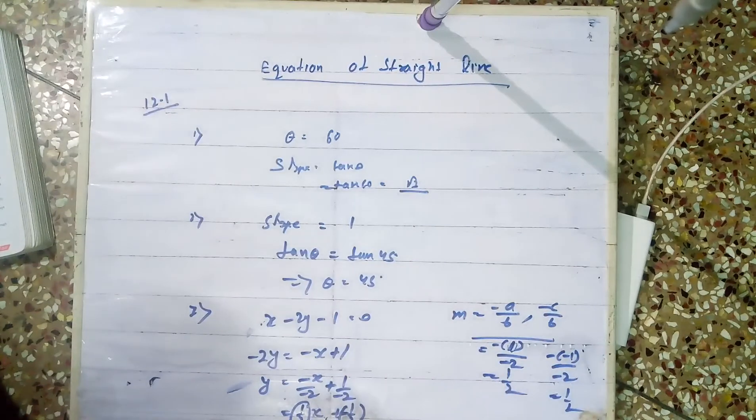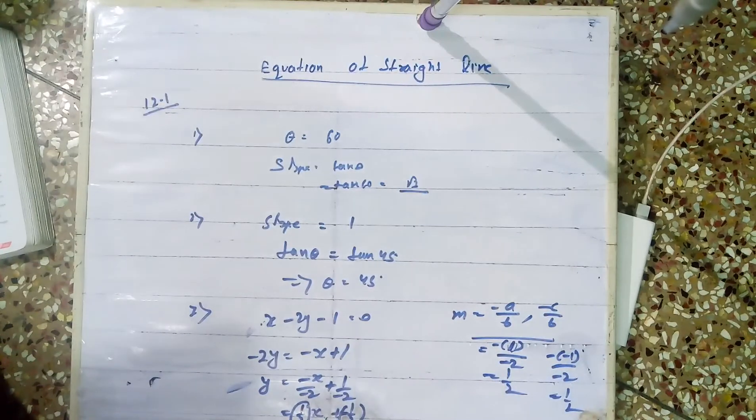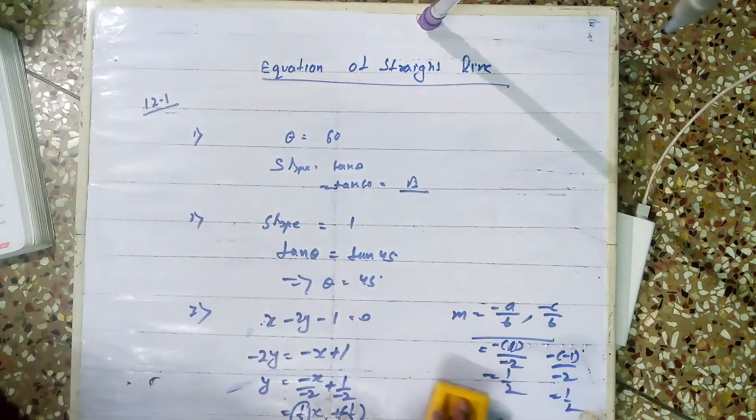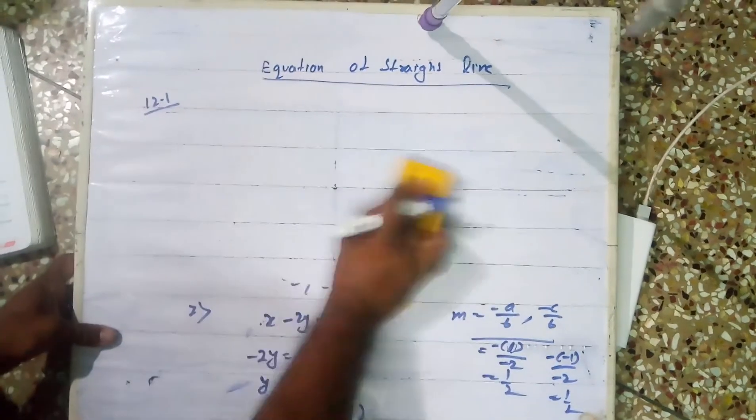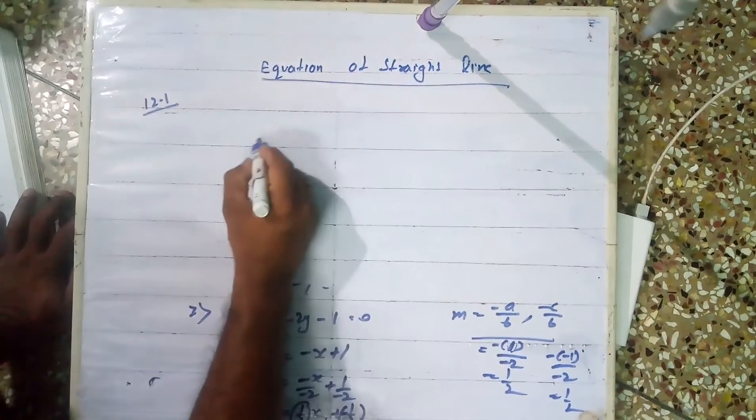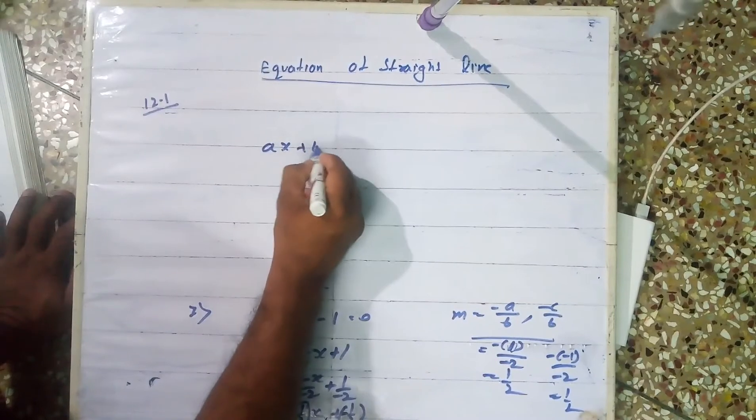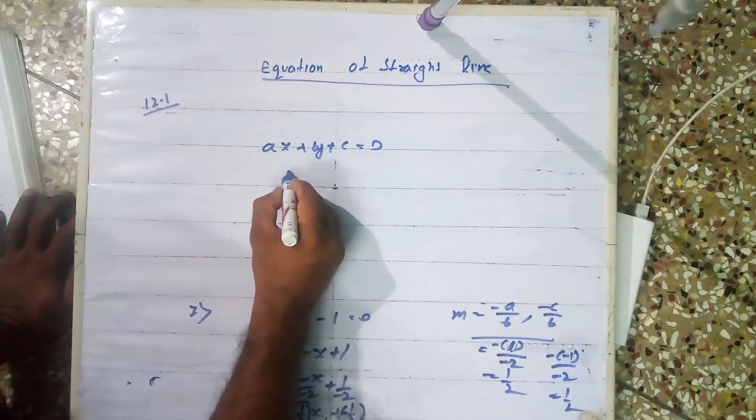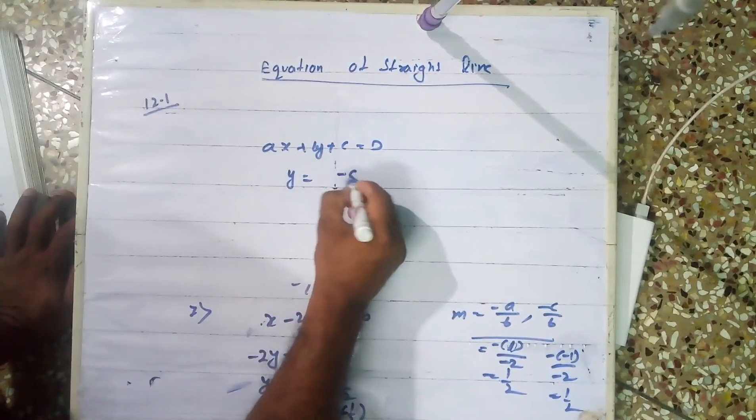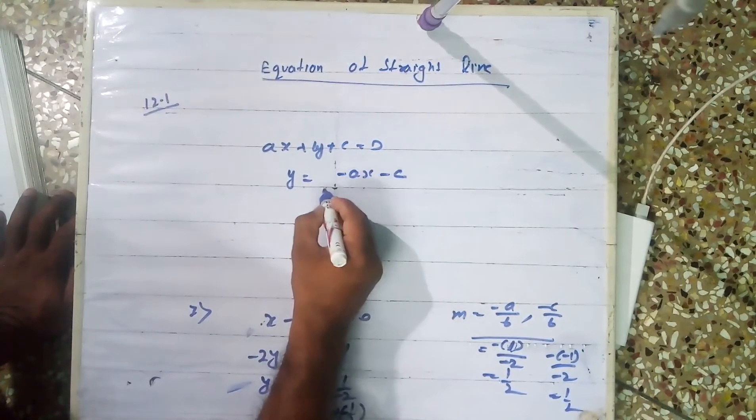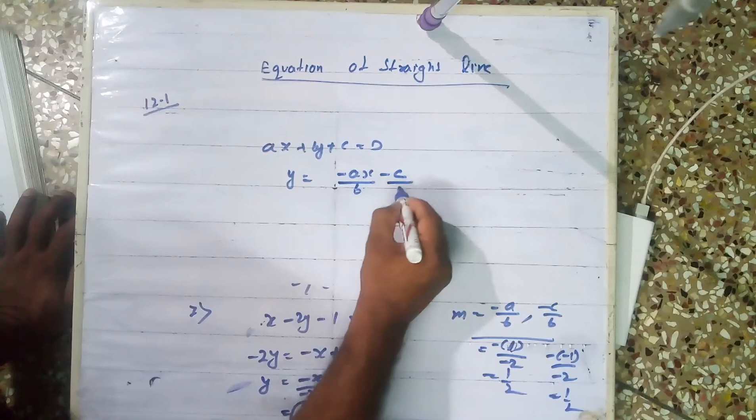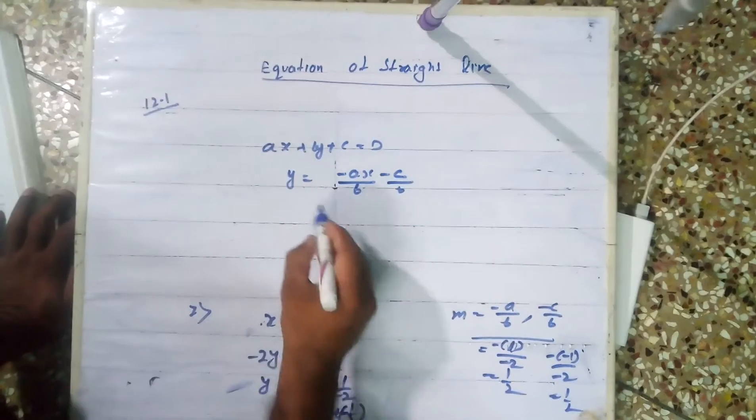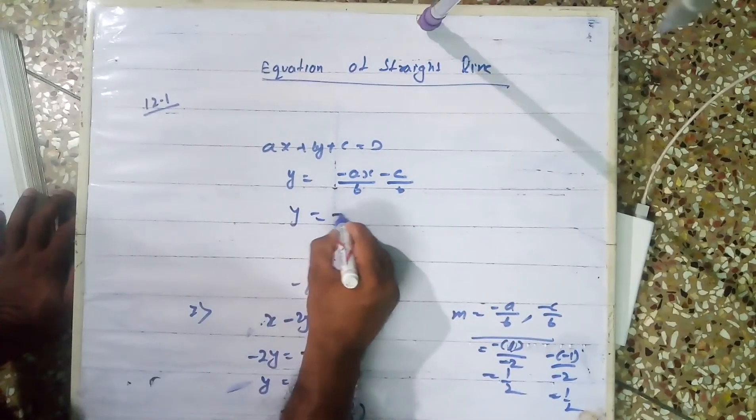I'll show you how. This way you can do it by the general method. The general equation is ax + by + c equals 0. So y equals -ax minus c, divided by b. This is y equals (-a/b)x plus (-c/b).